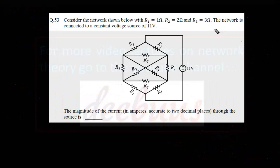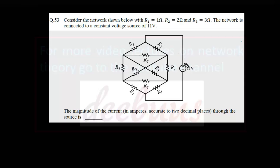Moving to the next question: consider the network shown below with R1 = 1 ohm, R2 = 2 ohm, and R3 = 3 ohm. The network is connected to a constant voltage source of 11 volts, and we have to calculate the magnitude of the current through the source.